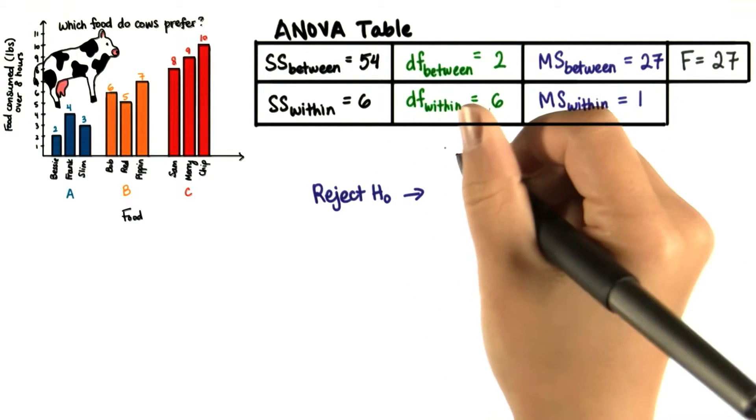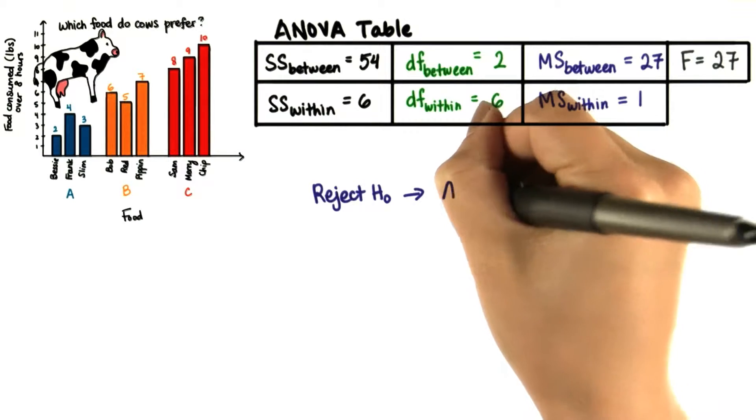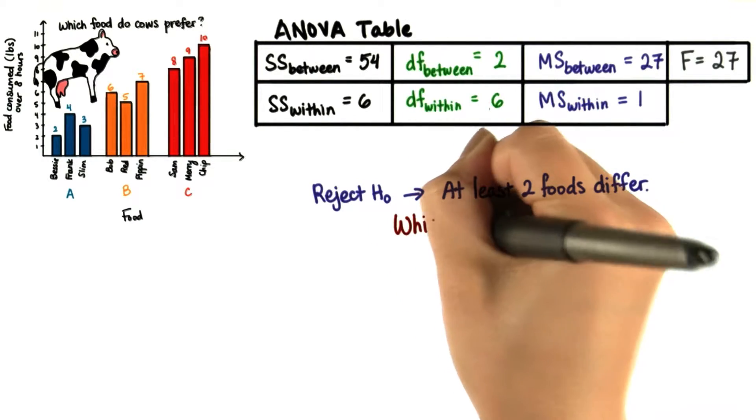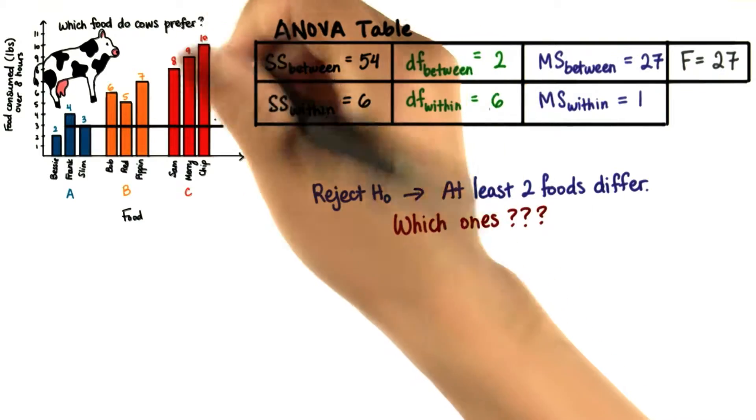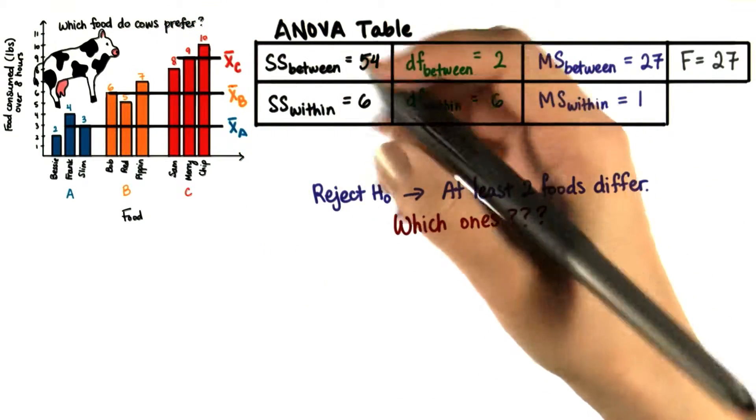By rejecting the null, we know that at least two of the foods differ in terms of mean amount consumed. But we don't know which ones differ. We can see that all three of the means differ from each other, but we don't know if these differences are due to sampling error.